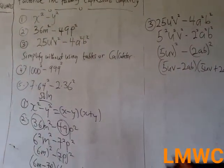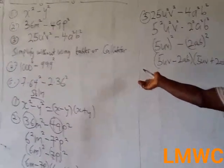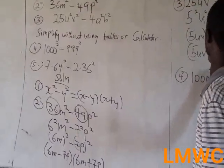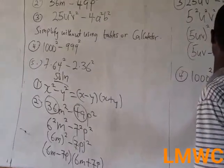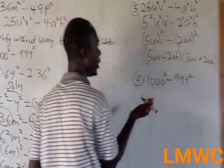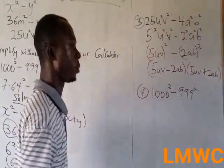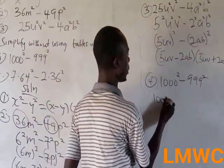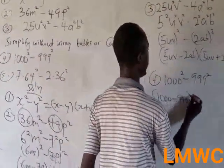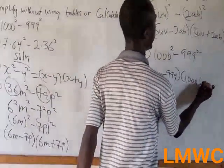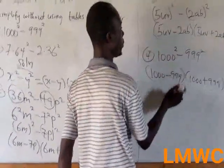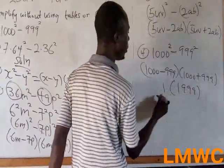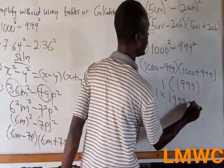The second part is to simplify without using tables, using the difference of two squares to simplify calculations. Question 4: 1000 squared minus 99 squared. Applying the principle, it becomes (1000 minus 99)(1000 plus 99). Once we subtract we get 1, and 1000 plus 99 is 1099, so the answer is 1 times 1099, which equals 1099.